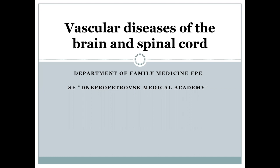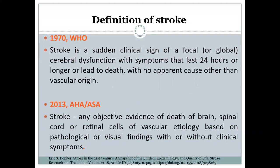Good morning, dear students. We start several lectures and today we're going to discuss physical disorders of the brain and spinal cord. As usual, we start from the definition of stroke. According to the World Health Organization, stroke is a sudden clinical onset of a focal or global cerebral dysfunction with symptoms that last 24 hours or longer, or lead to death, with no apparent cause other than vascular origin. A more modern definition: stroke is any objective evidence of death of brain, spinal cord, or retinal cells of vascular etiology, based on pathological or imaging findings, with or without clinical symptoms.